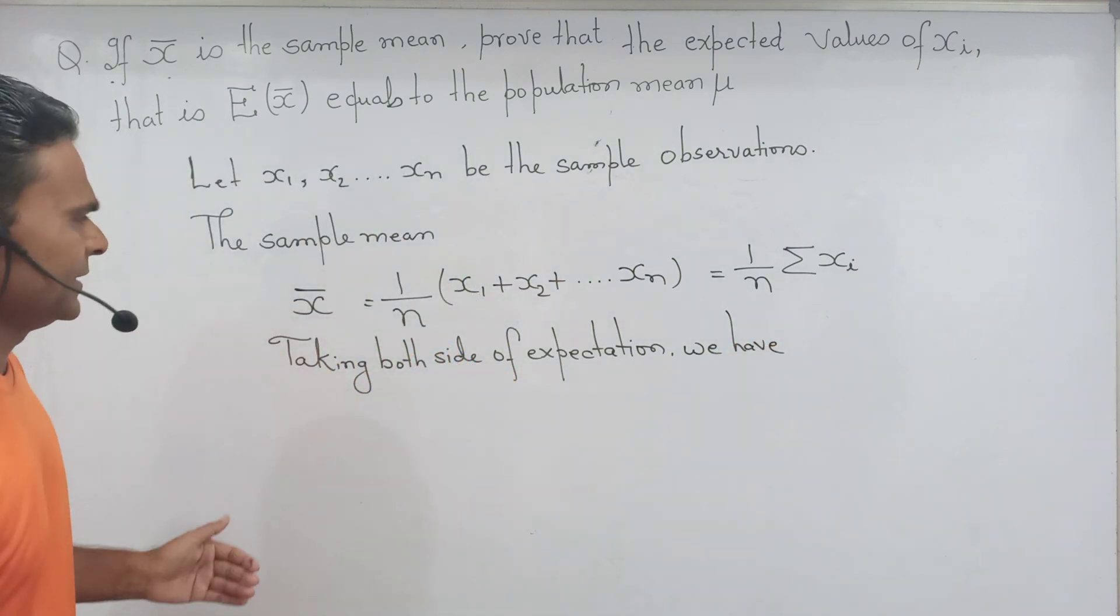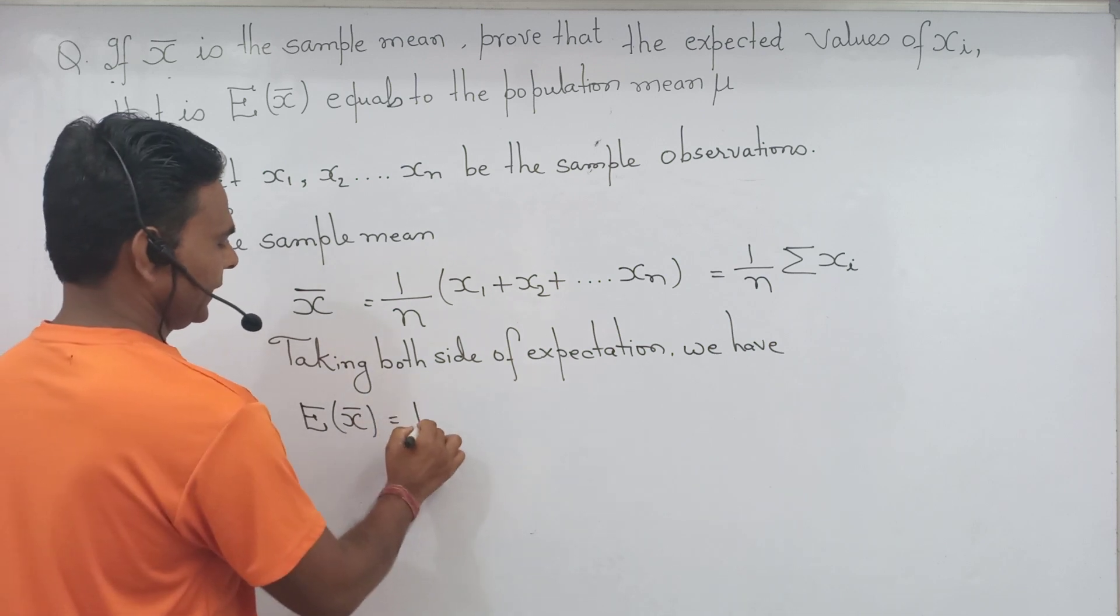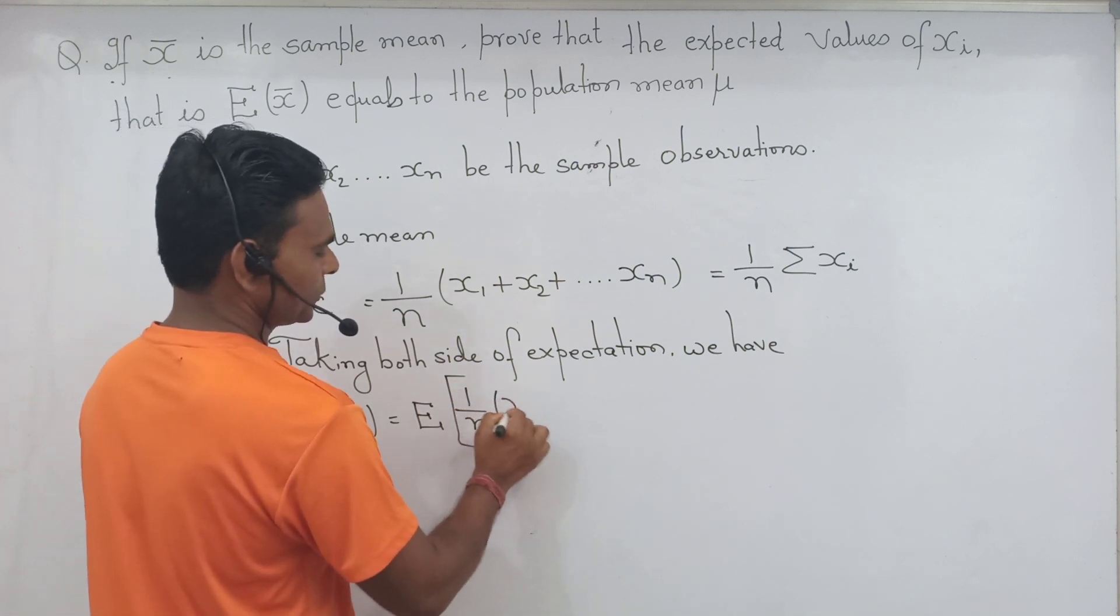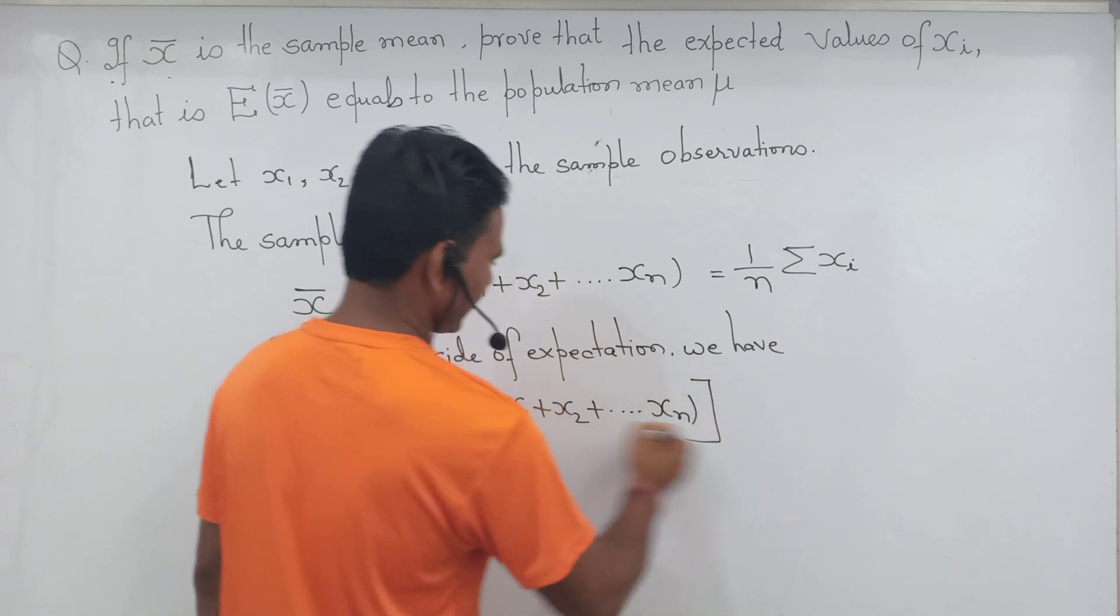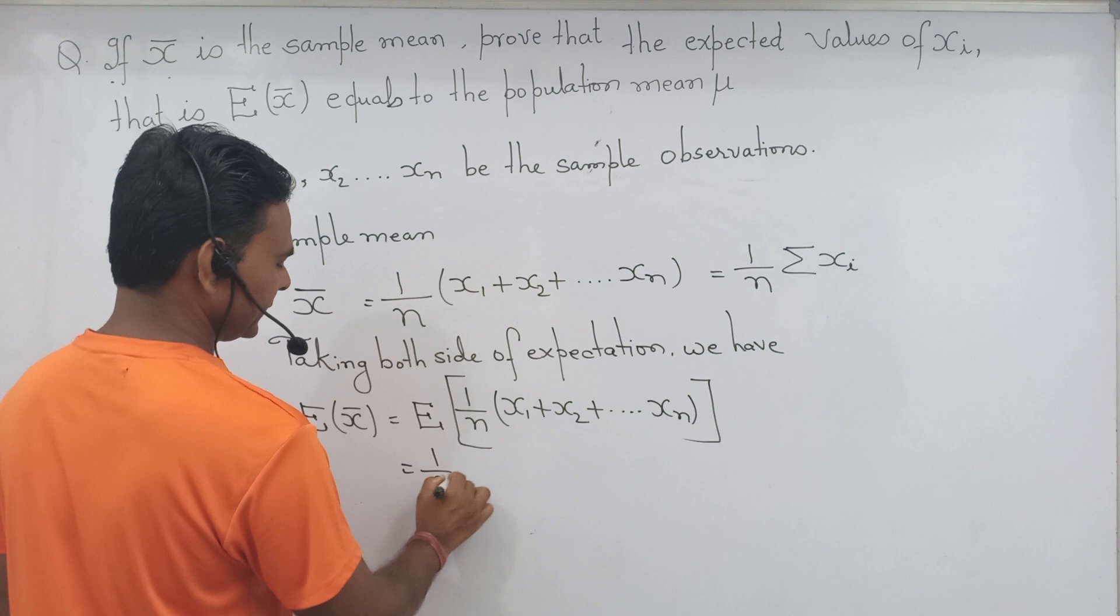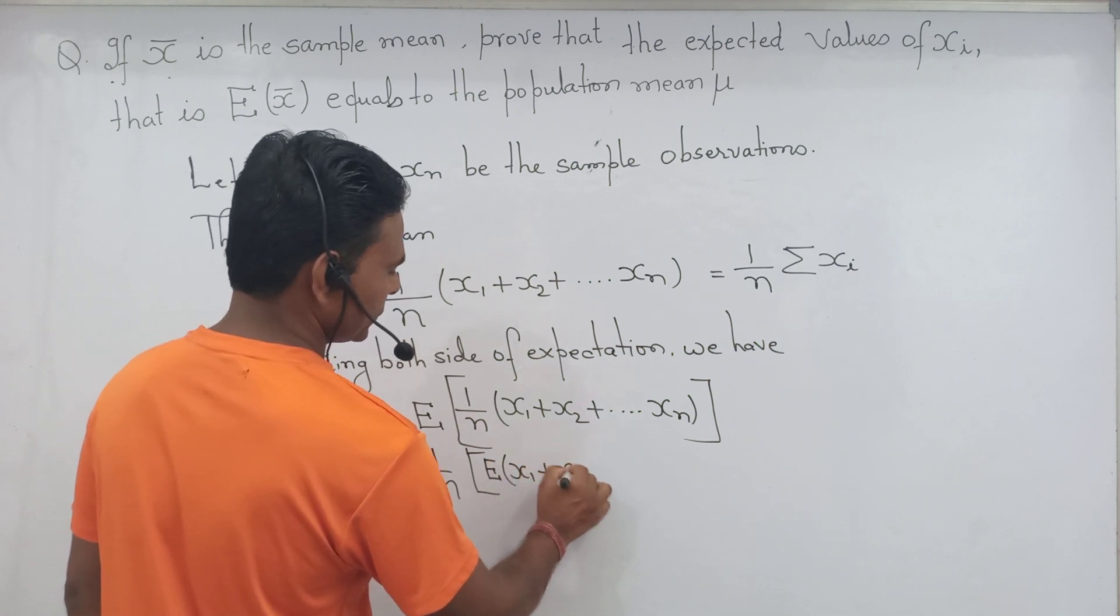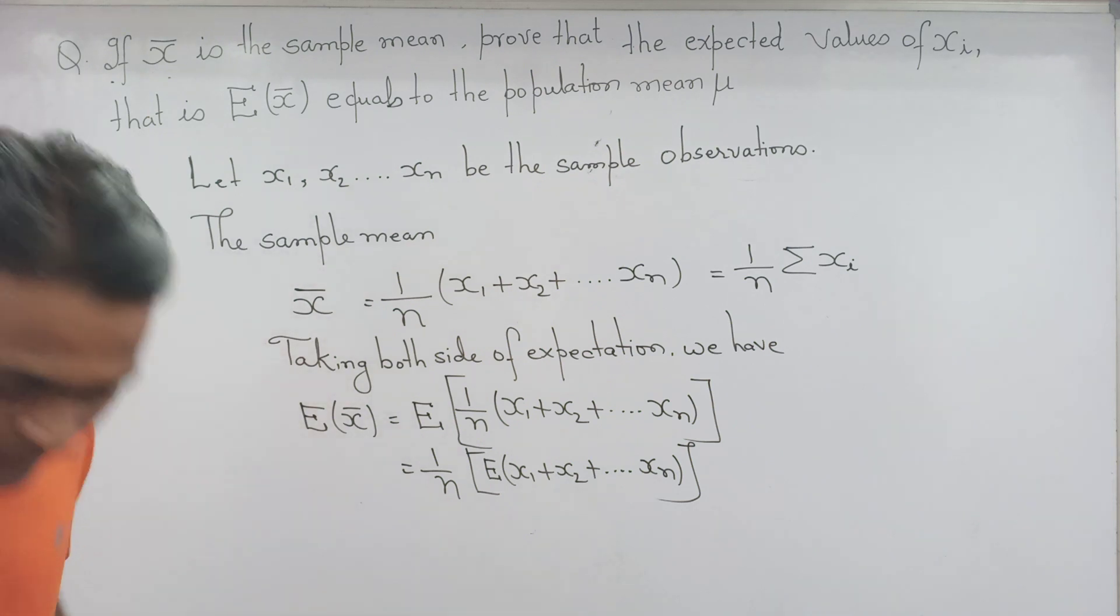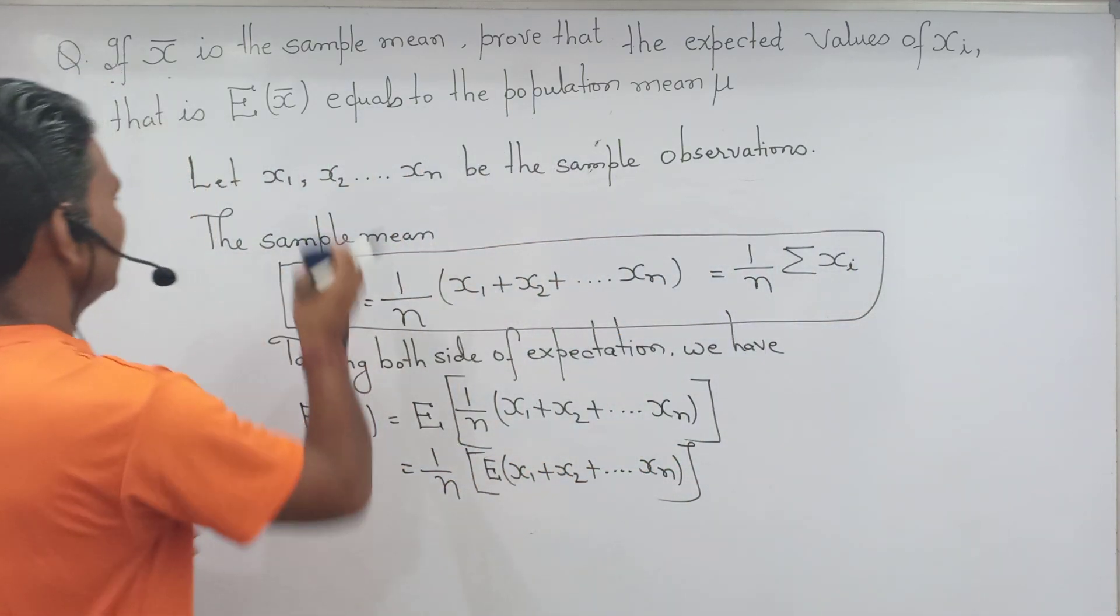Expectation we have. Expected value of mean X̄ equal to expected value 1 by n bracket X_1 plus X_2 plus dot dot dot X_n.